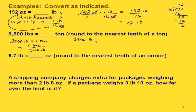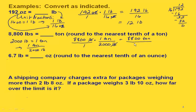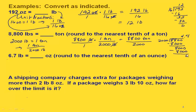Now we have 8,800 pounds times one ton over 2,000 pounds. We write this over one, and then our pounds cancel out. We have 8,800 times one ton on top, giving us 8,800 tons in the numerator, and 2,000 in the denominator. 2,000 goes into 8,000 four times; 4 times 2,000 is 8,000, and when we subtract we get 800. Rounding to the nearest tenth, we go to the hundredths place: 2,000 into 8,000 is four again, with a remainder of zero. This gives us 4.4 tons.